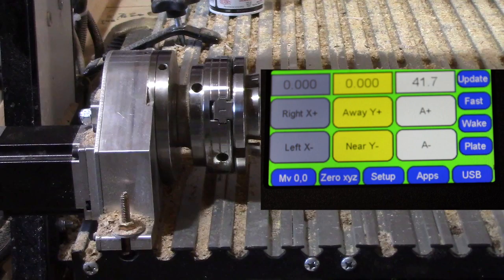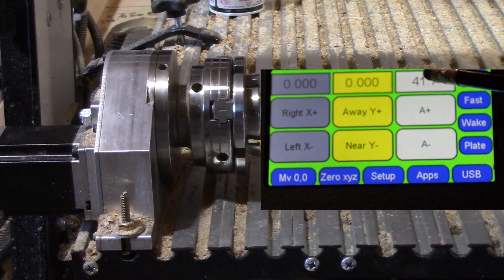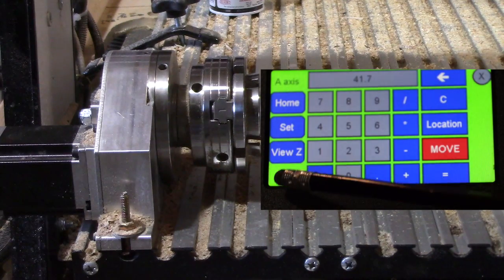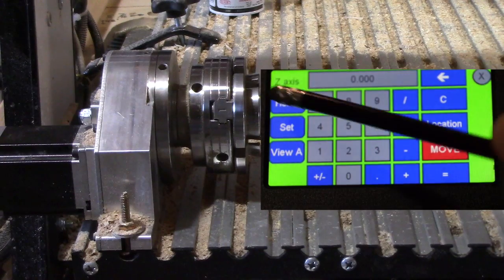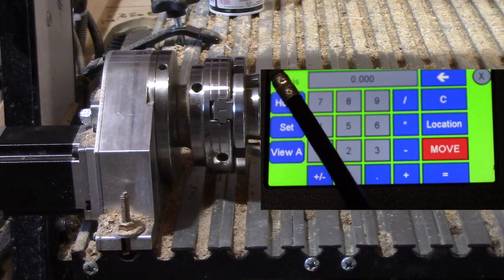To get it back or flip it back to the Z axis, again touch this point, come over here, hit view Z and you see the Z axis pops up right there.